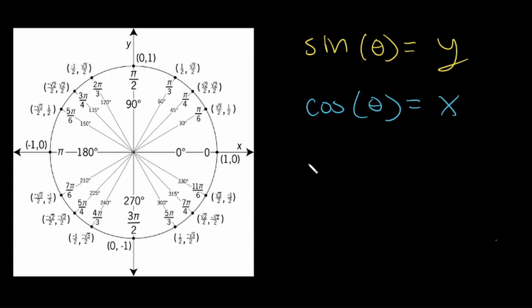And finally, we have tangent of theta. And we know tangent is equal to sine over cosine. So our tangent here is going to be equal to y over x because that would be sine over cosine.